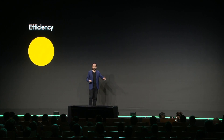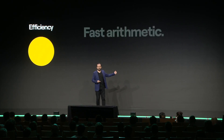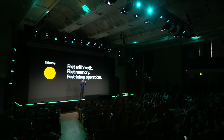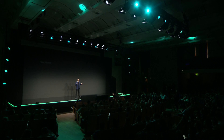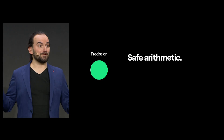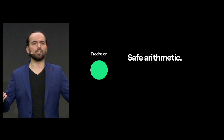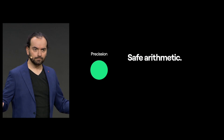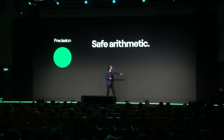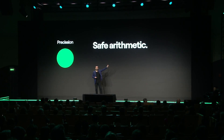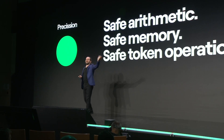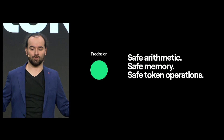I talked about the fast arithmetic, fast cryptography, and fast token operations we have in the VM. But there's something more: they're also very safe, because we've tested them very well and they've been used in dozens and dozens of contracts. We've never had an overflow problem on Elrond. We've never had memory issues on Elrond. Re-entrancy attacks or double-spend are unheard of on Elrond because of these operations we've built.